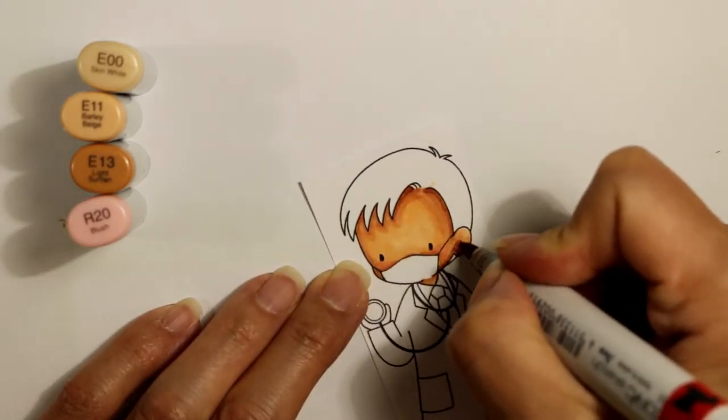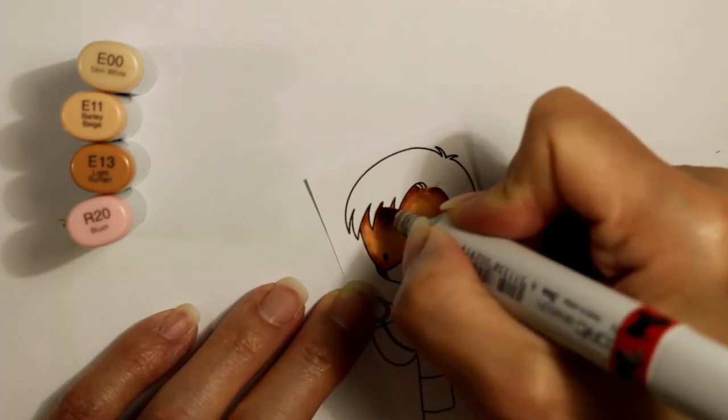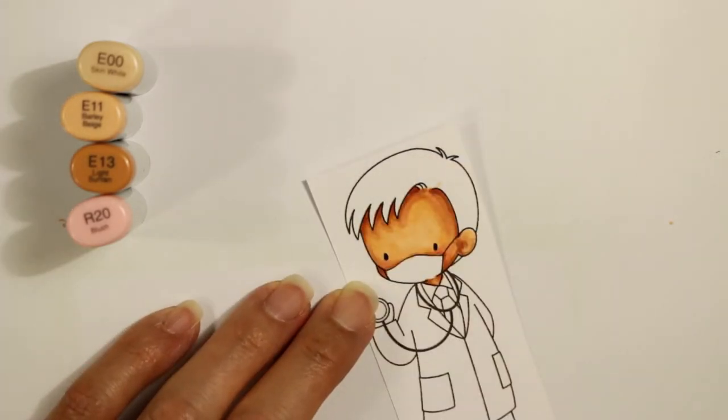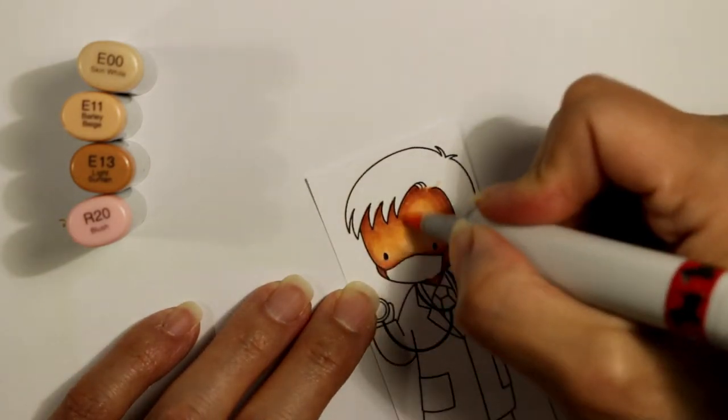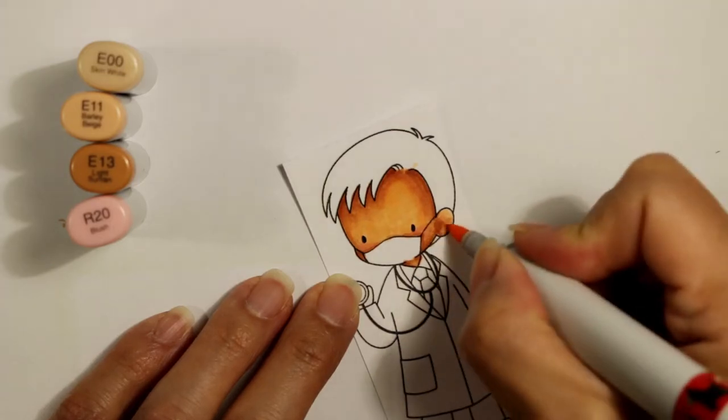And I'm trying to remember periodically to color his neck area to underneath the mask. Now I'm re-emphasizing the darkest shadows with the E13 here, especially under his bangs and along the sides where his part would be a little bit darker. And then I'm trying to go back in and blend again.